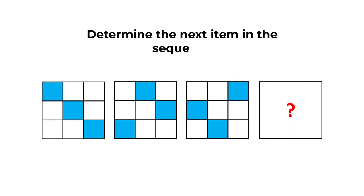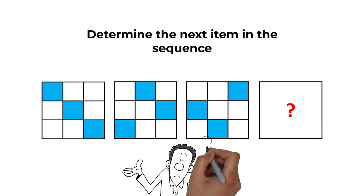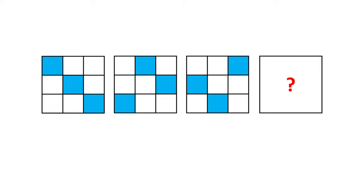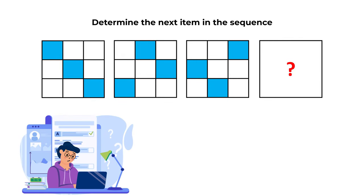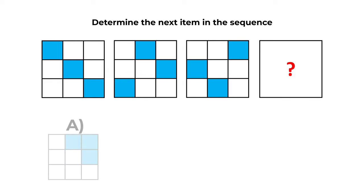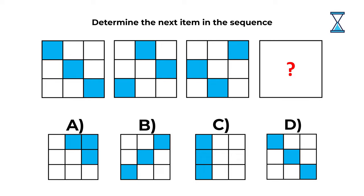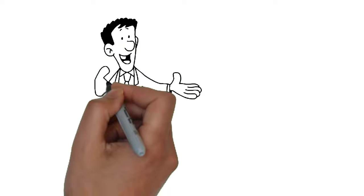Here is a very interesting problem you might frequently get on the test. You need to determine the next item in a sequence of large squares, each containing nine small squares of different colors. You have four choices: A, B, C, and D. Give yourself 10 to 30 seconds to figure out the solution.